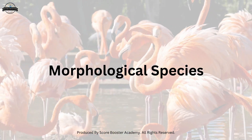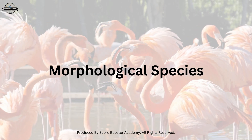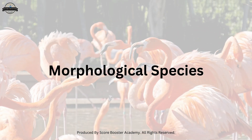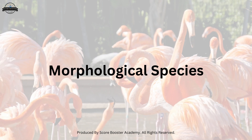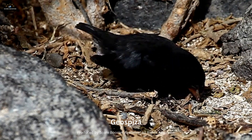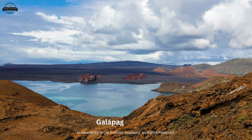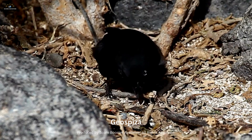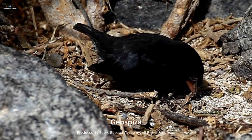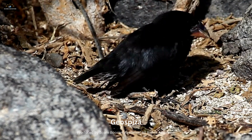The morphological species concept focuses on the physical characteristics of organisms to classify them into distinct species. One relevant example is the Galapagos finches, genus Geospiza. These finches inhabit the Galapagos Islands and are known for their remarkable variation in beak size and shape. Each species of Galapagos finch has a distinct beak morphology specialized for a specific diet.